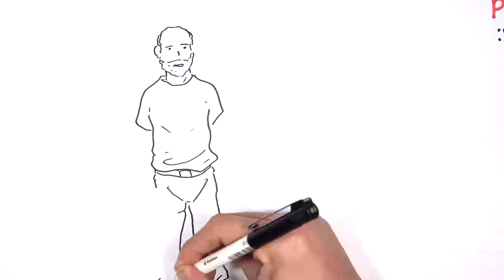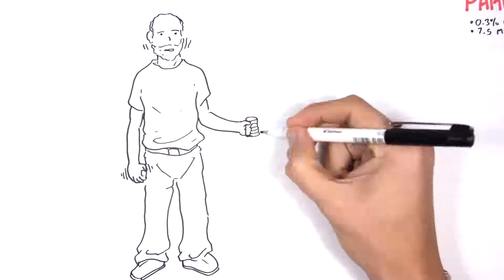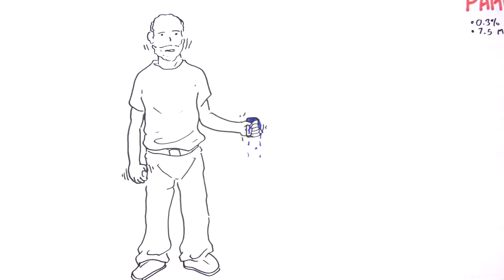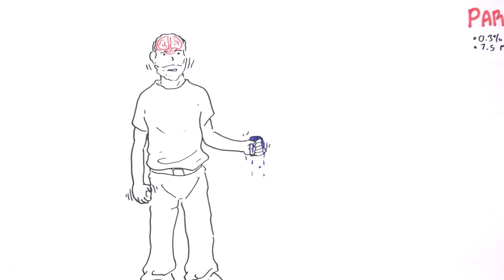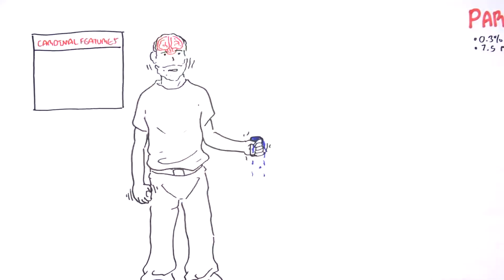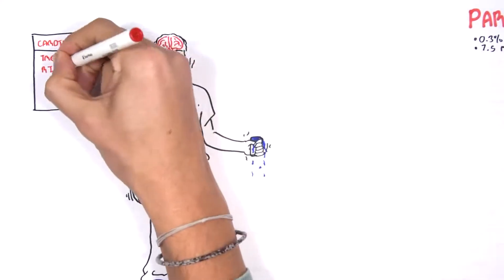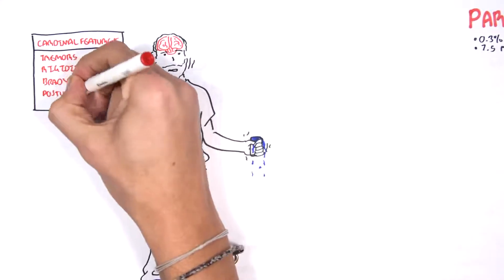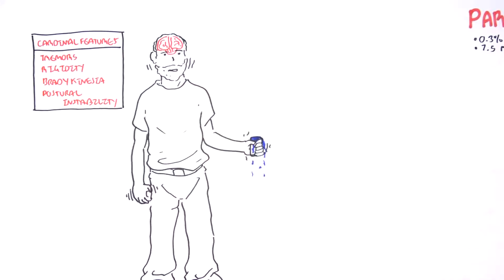Let's look at the signs and symptoms of Parkinson's. Here I'm drawing a patient who presents with tremors and shaking, due to Parkinson's disease that affects the brain. The cardinal features of Parkinson's disease include tremors, rigidity, bradykinesia, and postural instability.